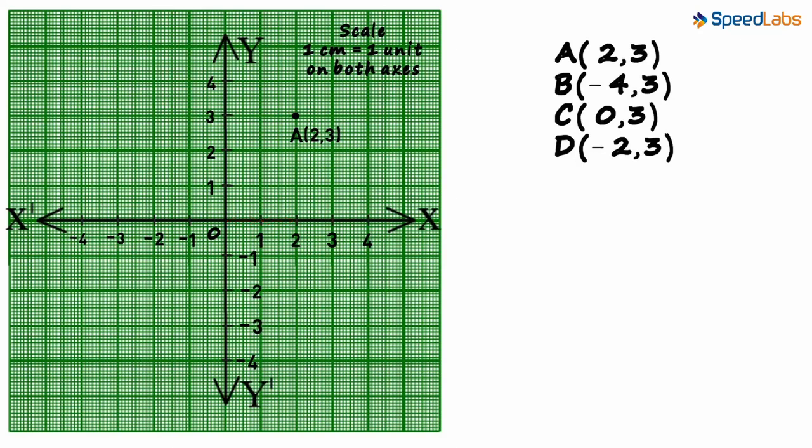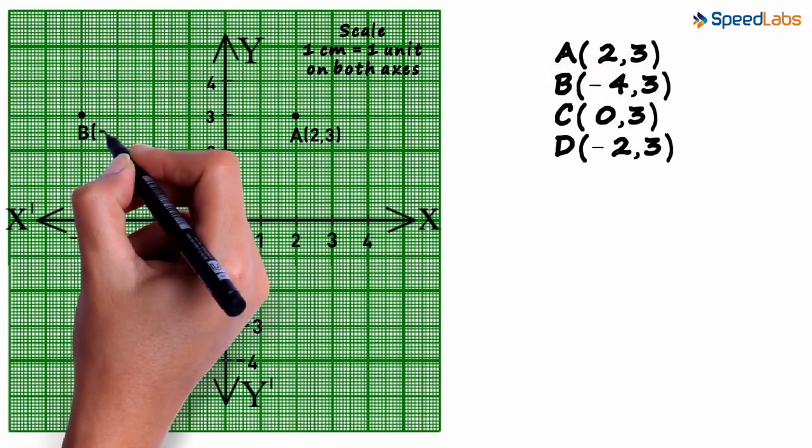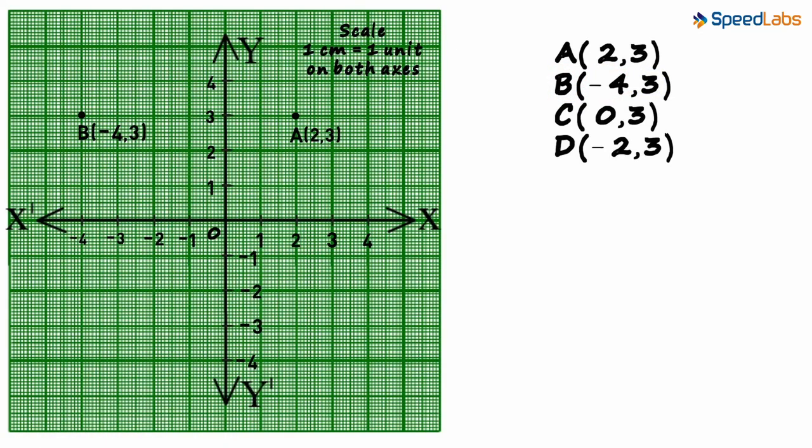The coordinates of point B are minus 4 and 3 so point B will be here. As the x coordinate is minus 4, we mark the point B 4 units to the left of the origin on the x axis. The y coordinate is positive.